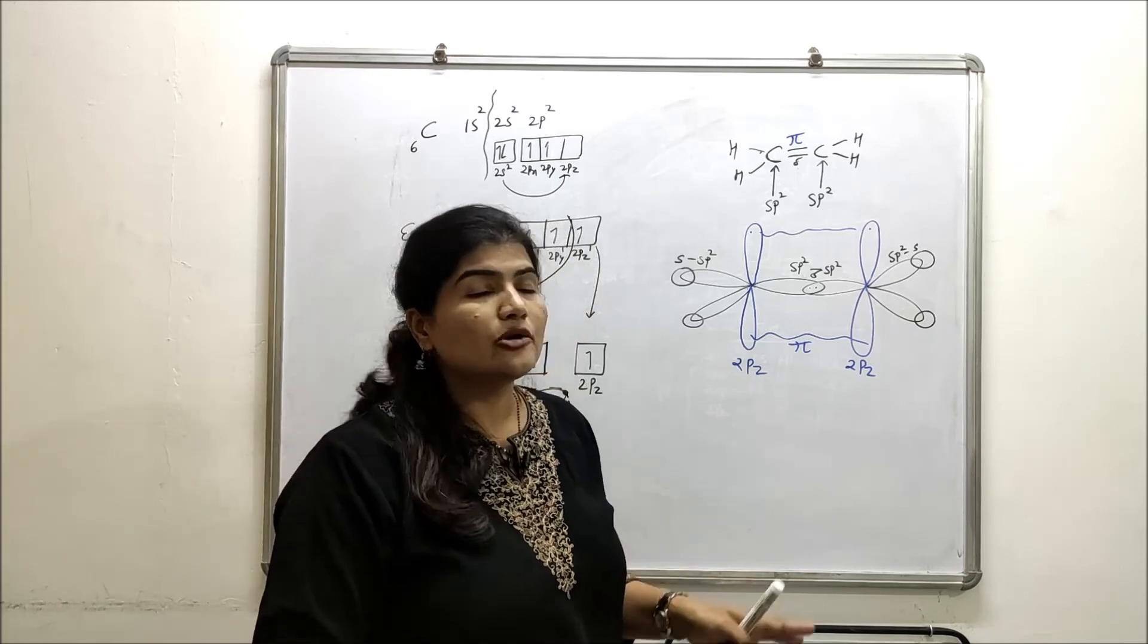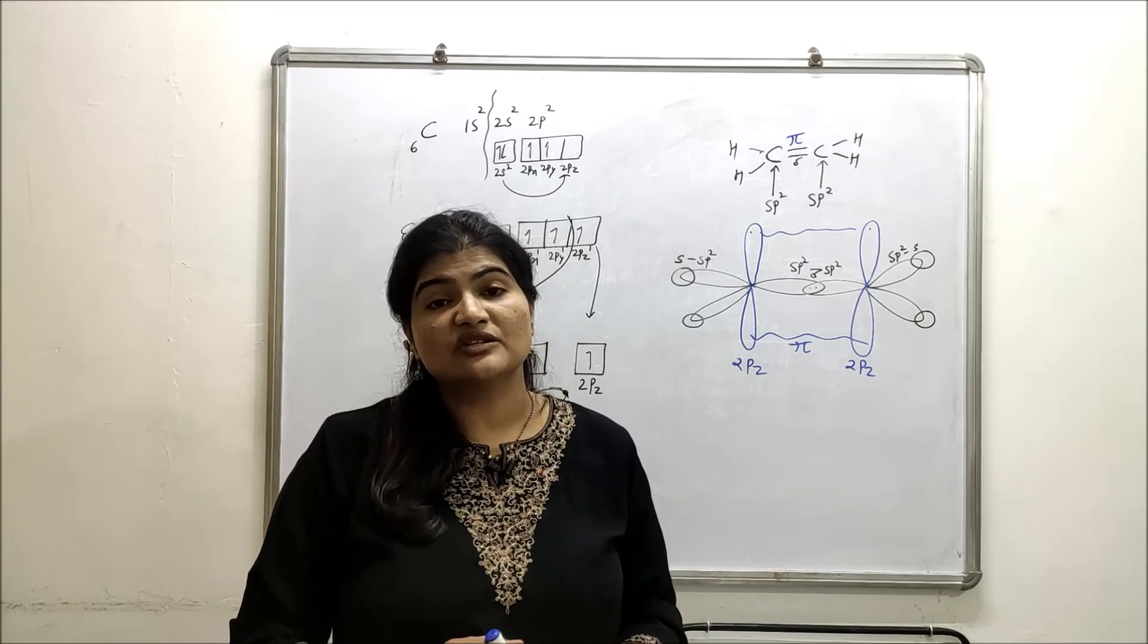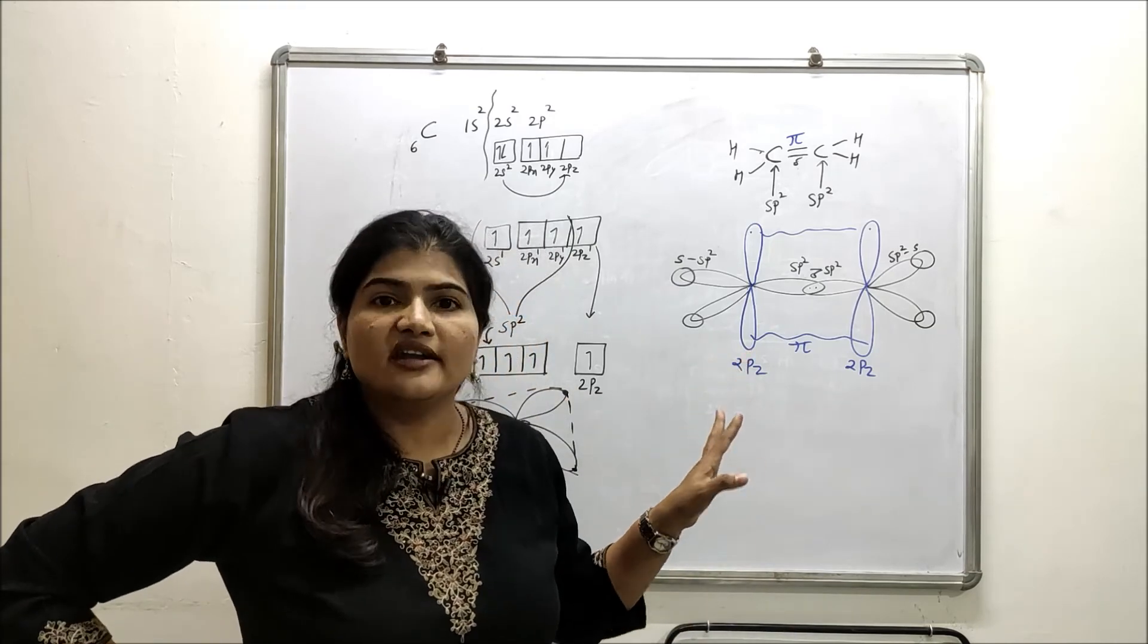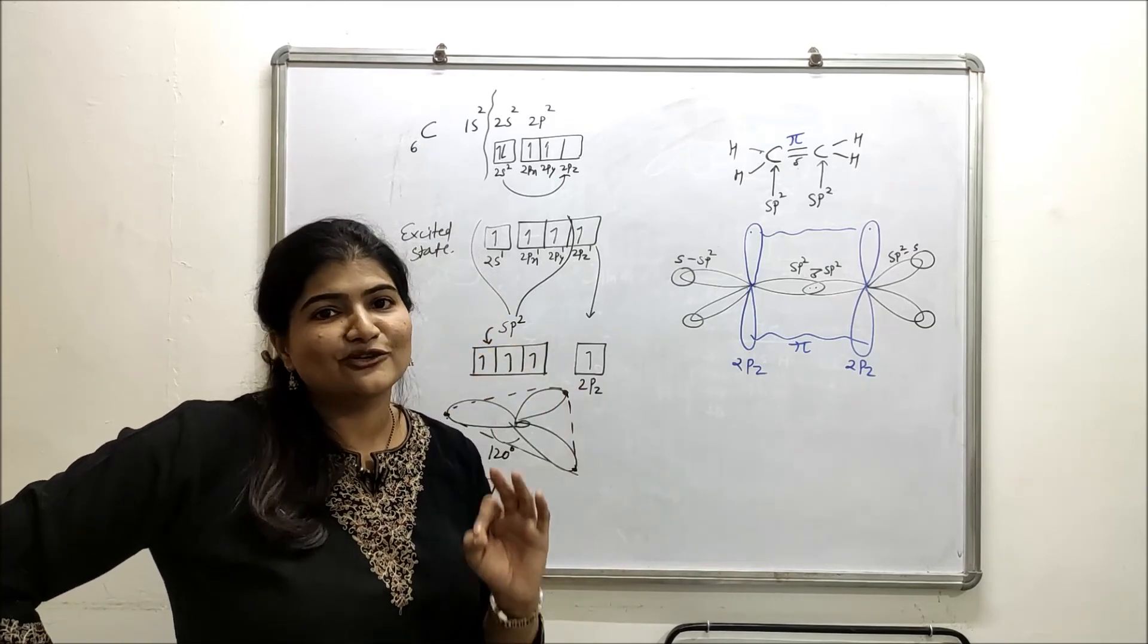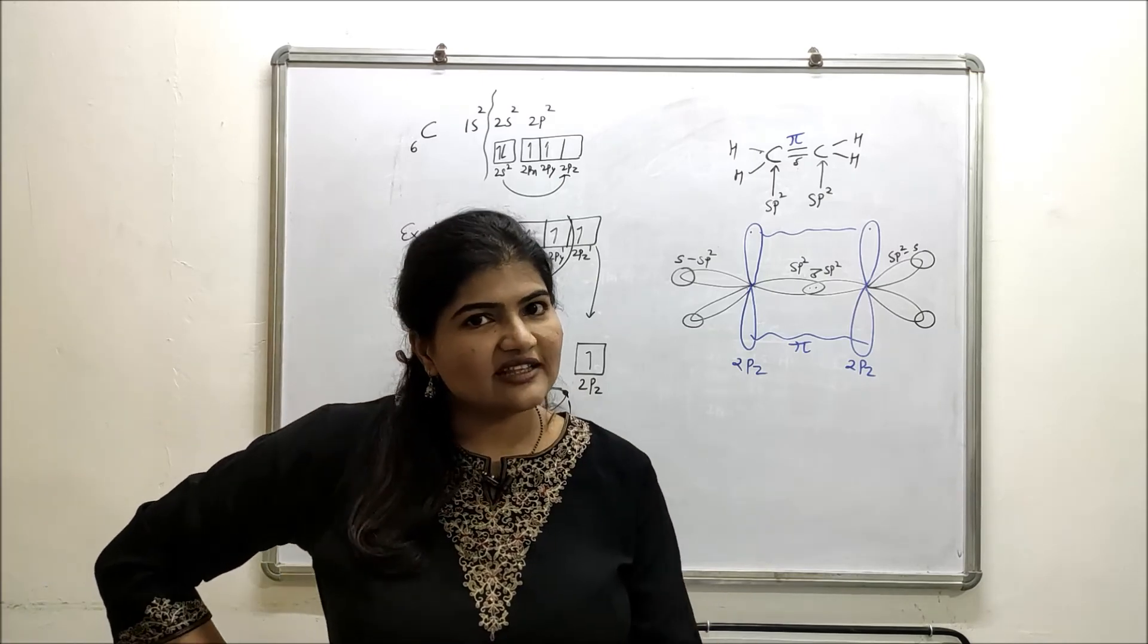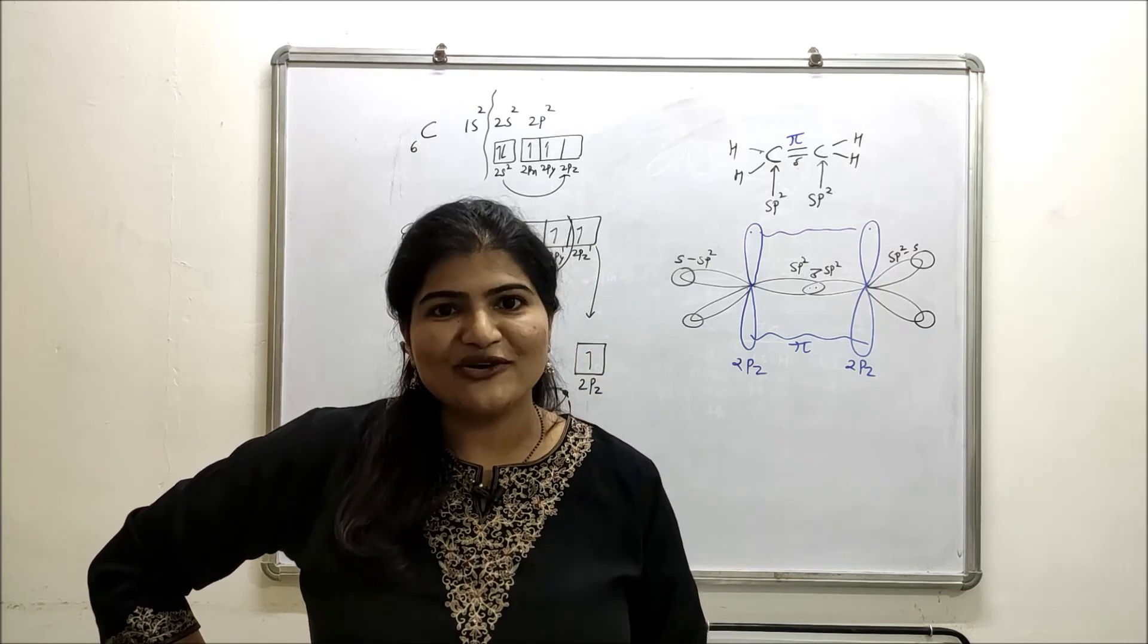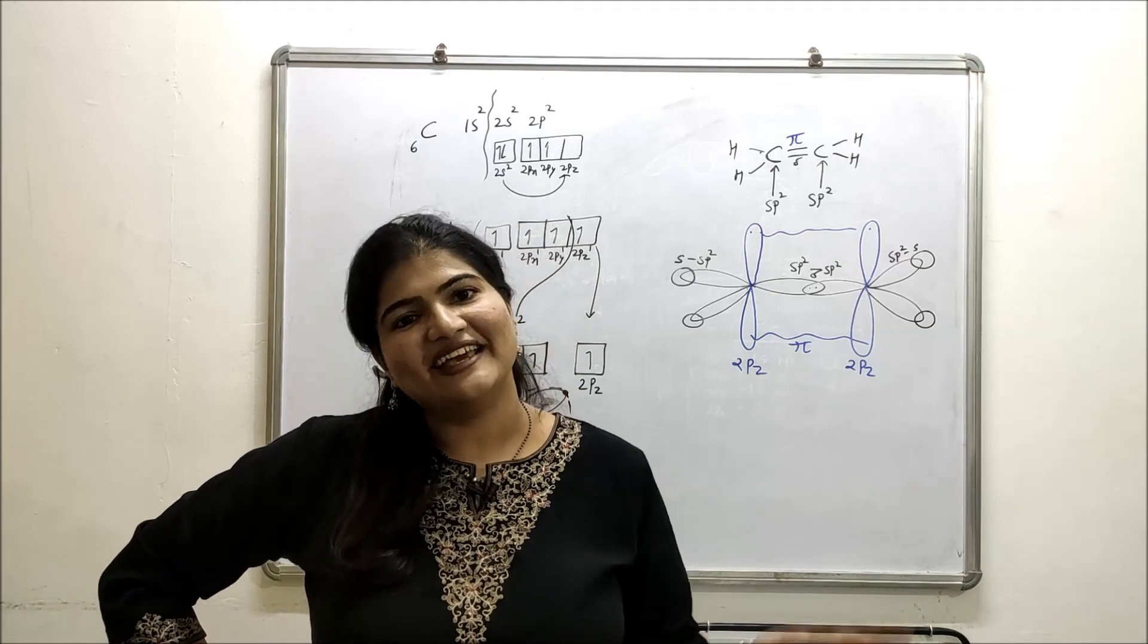You may draw similar orbital diagrams for other atoms where carbon has attached with three other atoms by formation of a double bond. So this is how sp² hybridization of carbon will look like. Now let's discuss the SP hybridization in the upcoming video. So stay tuned and do subscribe if you haven't yet. I will see you in that next video. Till then, take care. Bye bye.